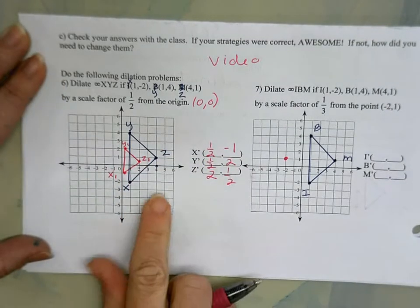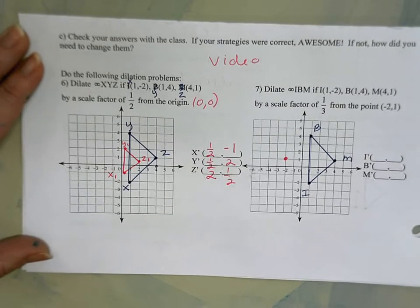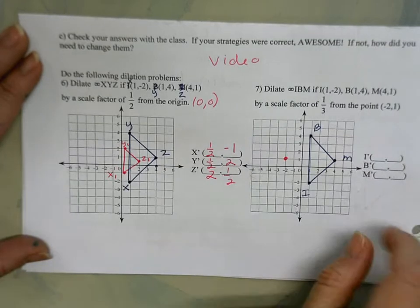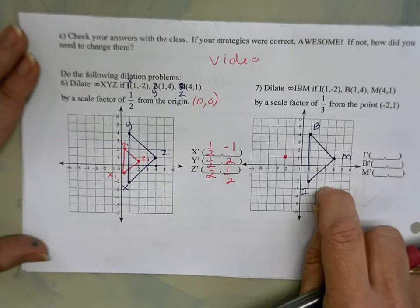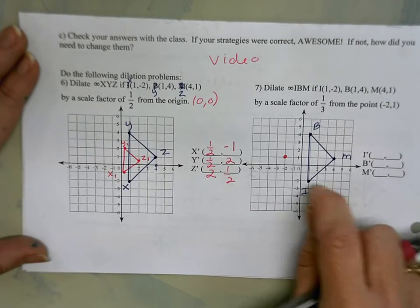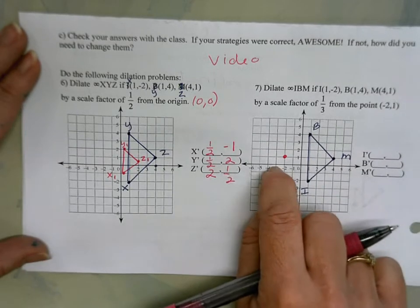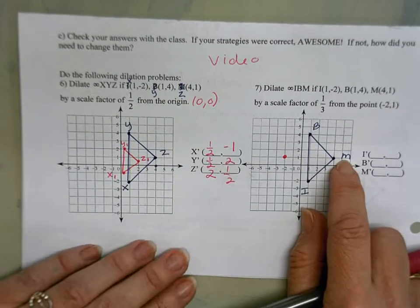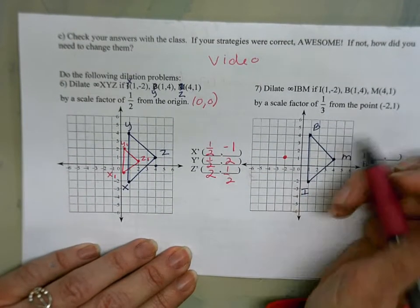All right, so now we look at seven. You can't just multiply by the scale factor because now we're not talking about how far is this triangle from the origin—we're asking how far is it from this point (-2,1). So I'm going to start with M because that just looks really straightforward. To get from my point (-2,1) to M...